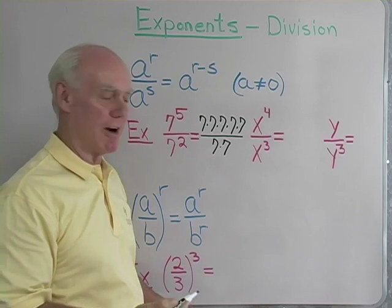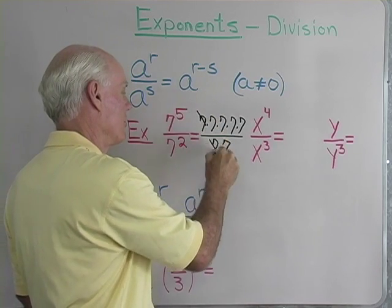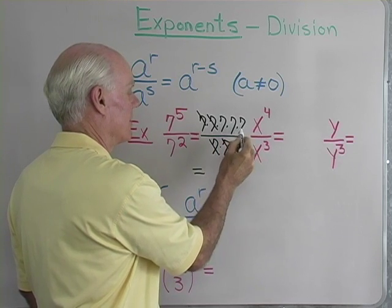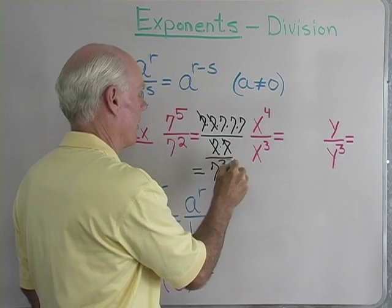Now, if I was to divide out factors common to the numerator and denominator, I would end up with 7 times 7 times 7, which is 7 to the 3rd power.